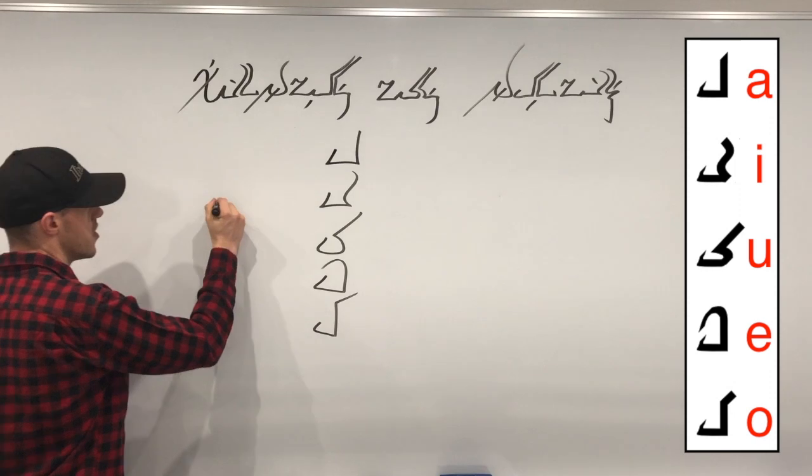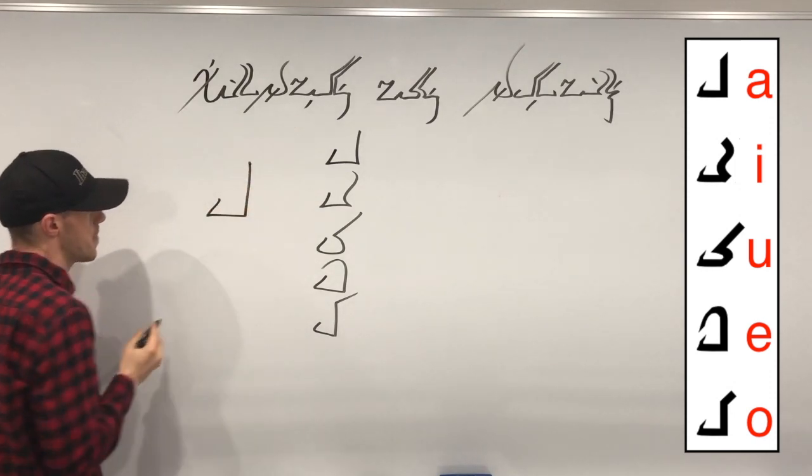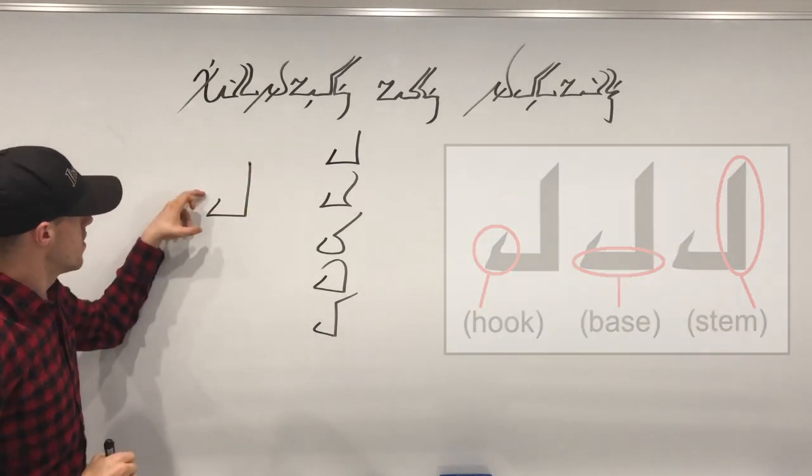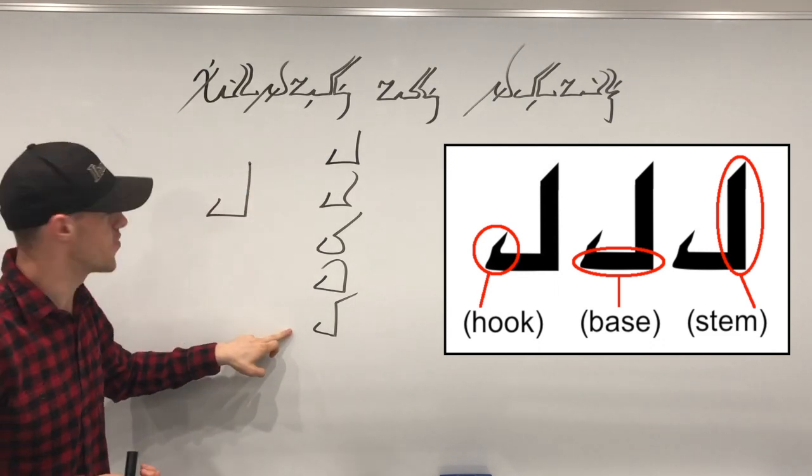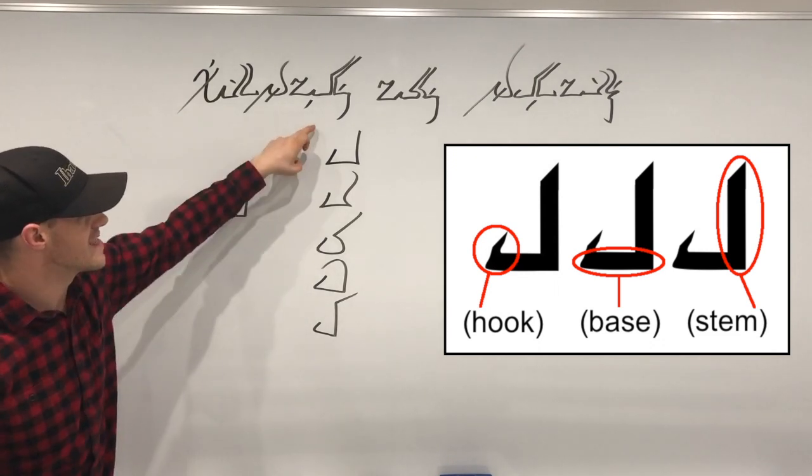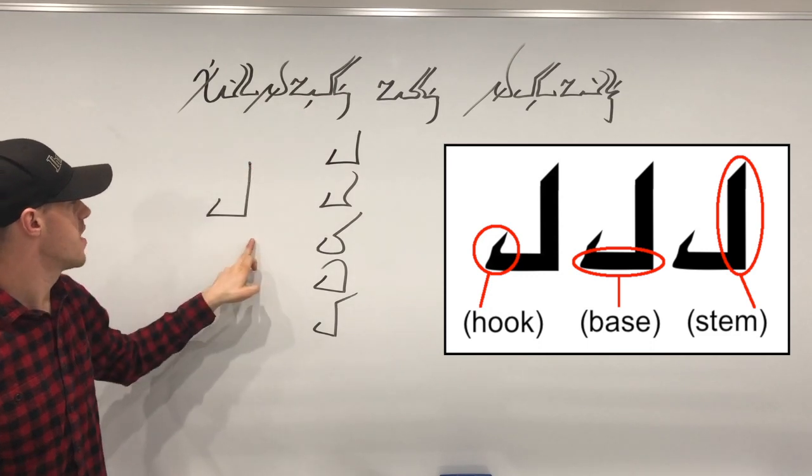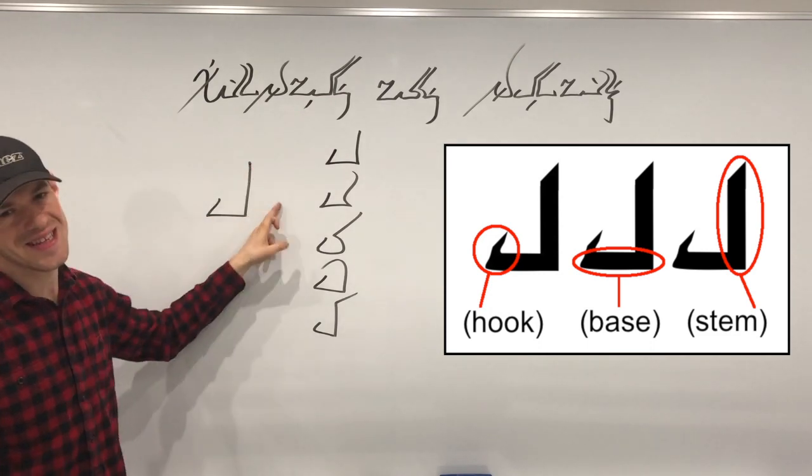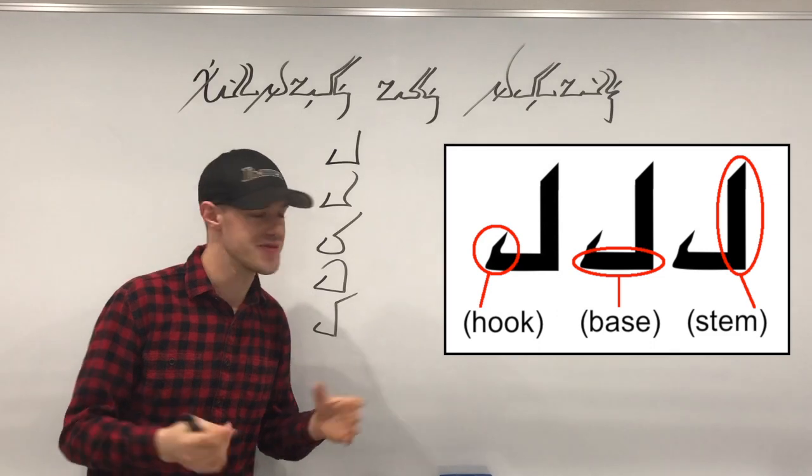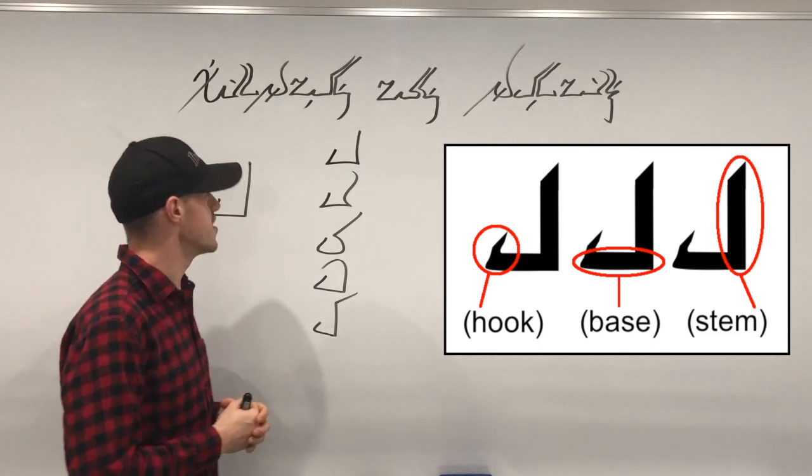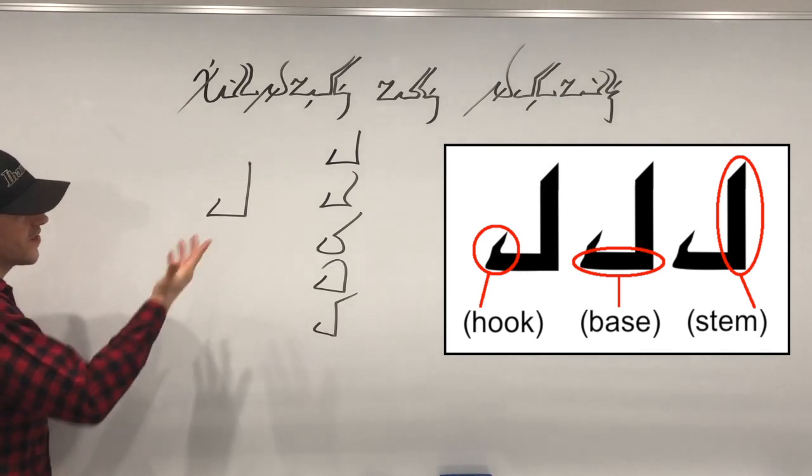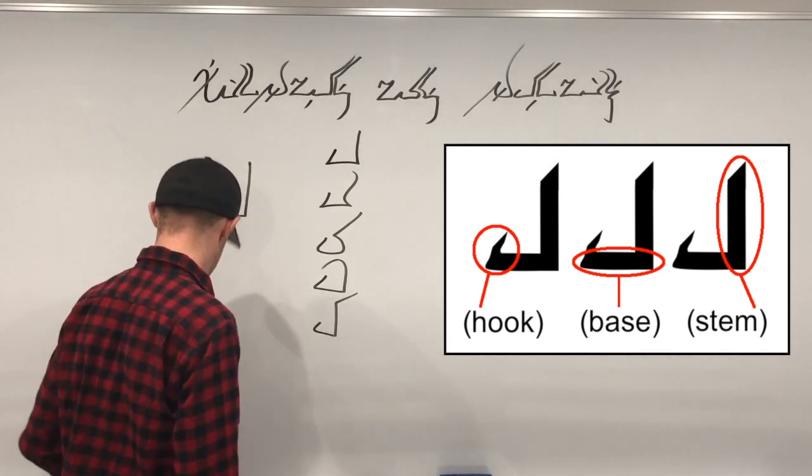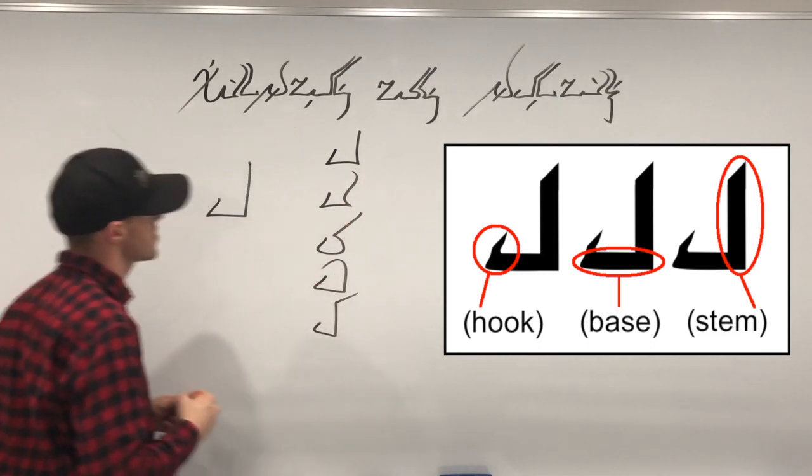Each vowel has what's called a hook, a base, and a stem. The hook and the base remain constant through all the vowels to create some uniformity. However, what dictates the vowel sound is the stem. Now, the hook and the base and the stem are by no means academic terms. They're just the terms that I used when I initially created this script.